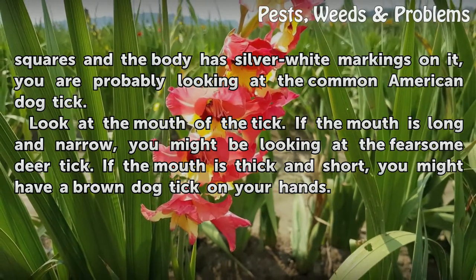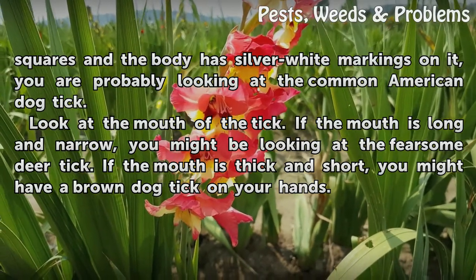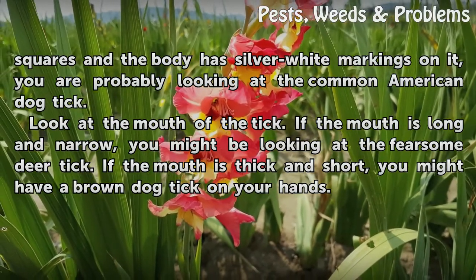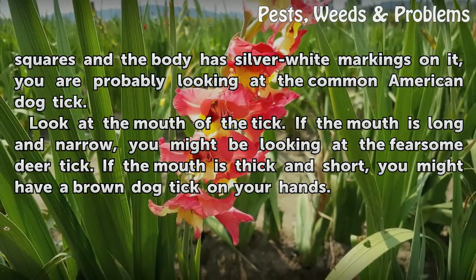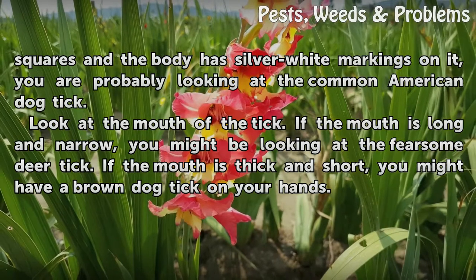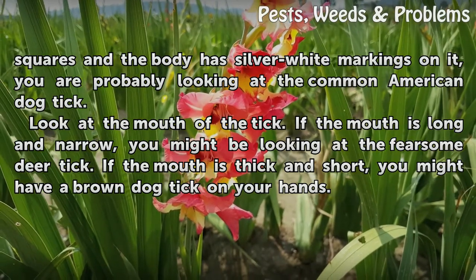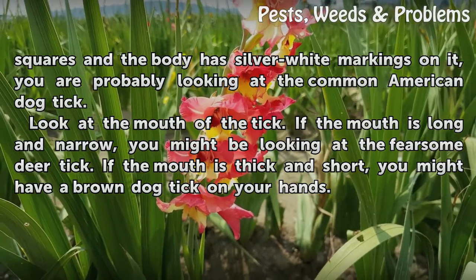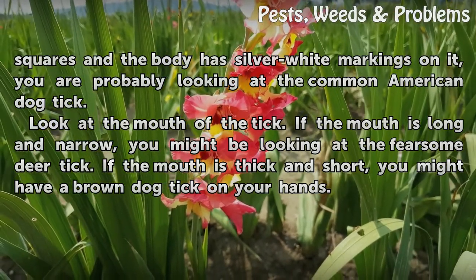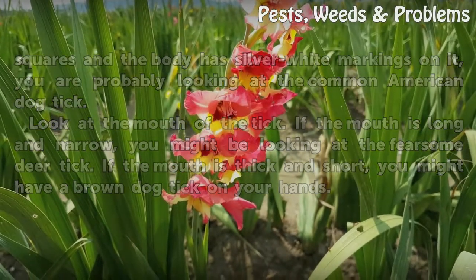Look at the mouth of the tick. If the mouth is long and narrow, you might be looking at the fearsome deer tick. If the mouth is thick and short, you might have a brown dog tick on your hands.